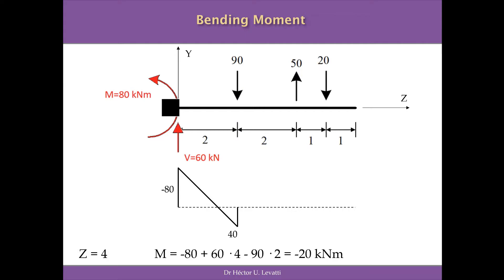For bending moment we go point by point, not interval by interval. When z equals 4, under the 50 kN force, the moment is minus 80 kN·m plus 60×4 minus 90×2 meters. Doing the operation, the moment is minus 20 kN·m — negative again. We represent this above the reference line and connect 40 with minus 20 using a linear function, giving the second part of the bending moment diagram.